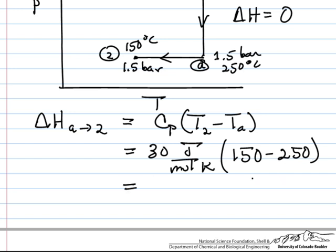And so this change then in delta H is minus 3000 joules, and I should indicate we're doing this for 1 mole, minus 3000 joules.